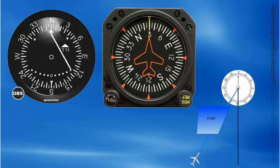What heading should we fly to intercept that radial? In general, the angle of intercept is based on the distance to the station. When far away, you should use a big angle, and when close, a small one. If you are unsure of your distance to the station, your best bet is to use a 45-degree angle of intercept. By the way, 45 degrees is nearly always a perfect intercept angle, unless you are extremely close to the station.